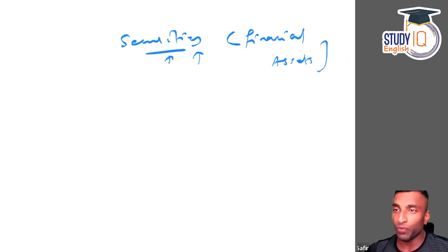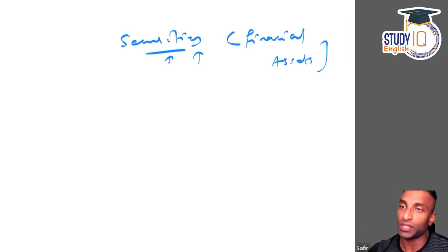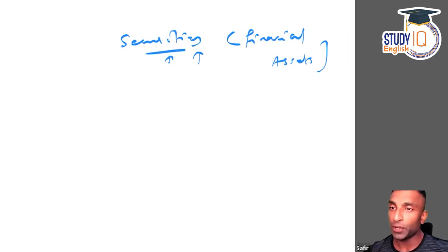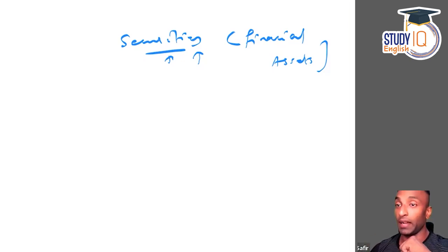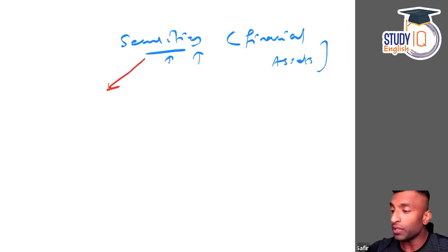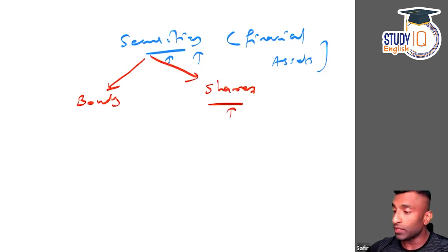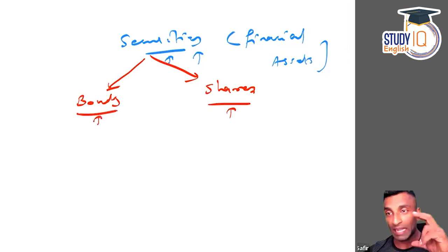Many of you have had confusion when I discussed preference shares, ordinary or equity shares, debentures, convertible debentures, treasury bills, and dated securities — especially when I talked about Basel norms. So I thought I'd cover it separately in an extensive video. We'll be talking mostly about bonds and shares: what are bonds, what are shares, and their different types.